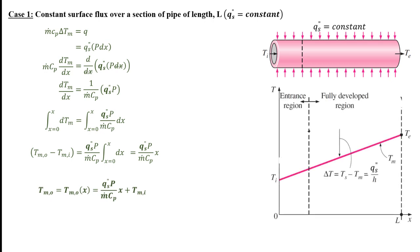That linear dependence is what you see in the graph. But what about the surface temperature — how does that change with x? In the thermal entrance region, h decreases with x, so the difference between the surface temperature and the mean temperature increases with x in order to keep the heat flux constant. In other words, the surface temperature increases at a faster rate with respect to x than the mean temperature. Once the flow is fully thermally developed, h is constant, so the difference between Ts and Tm is constant, and the surface temperature increases at the same rate as the mean temperature.